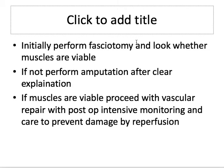If the muscles are viable, go ahead with the vascular repair, but be ready to face reperfusion injury: hydrate the patient well, promote diuresis, observe in the ICU, give oxygen, and provide full supportive care. If the muscles are not viable, a primary amputation is much better after clearly explaining the situation to the patient.